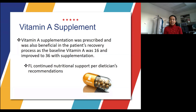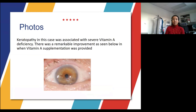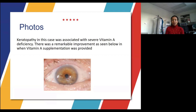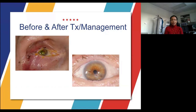The follow-up image shows remarkable improvement. The keratopathy was due to severe vitamin A deficiency, and the picture shows marked improvement in his cornea as vitamin A supplementation and other measures were used to treat this patient. A before-and-after comparison shows his initial exam versus his follow-up exam.